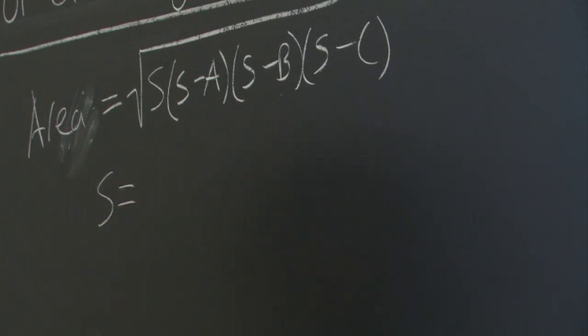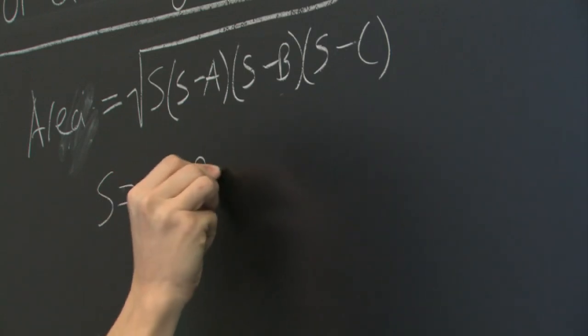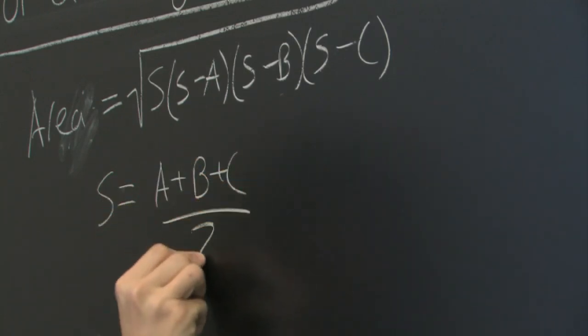And S, known as the semi-perimeter, is equal to A plus B plus C over 2.